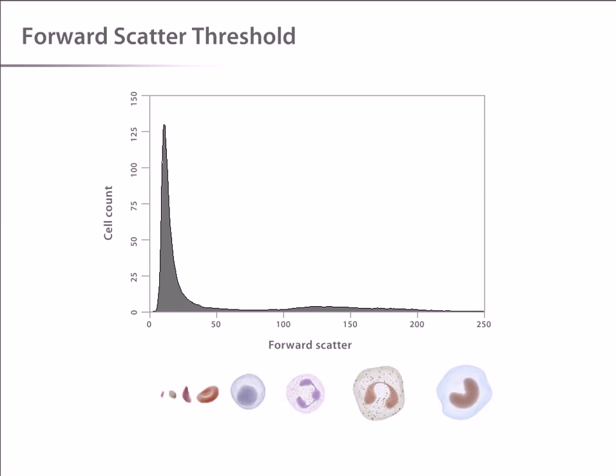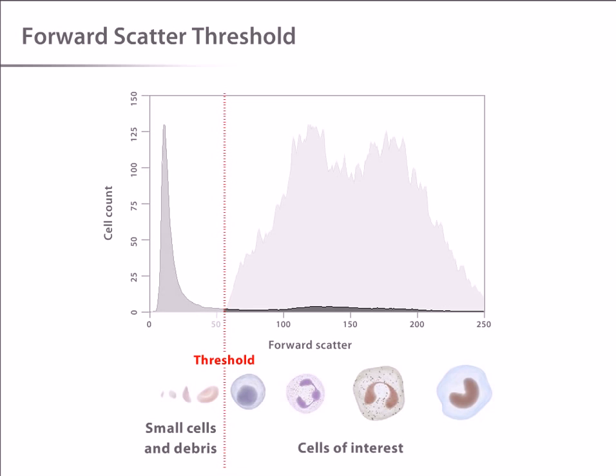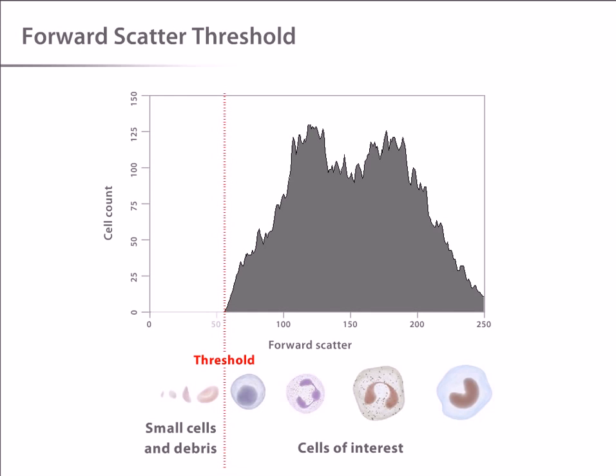One final important point regarding data collection is the use of a threshold. If every single particle passing through the laser caused the instrument to collect data, the data pool would be dominated by information coming from a very large number of minute particles like platelets and debris. To prevent this, a threshold is set such that a certain forward scatter pulse size must be exceeded for the instrument to collect the data. On the histogram, the blank area represents the small cells and debris that are excluded from analysis by the threshold. This means that the majority of events that the cytometer collects are the cells of interest. It is important to realize that the small particles are still passing through the instrument, they are just being ignored.